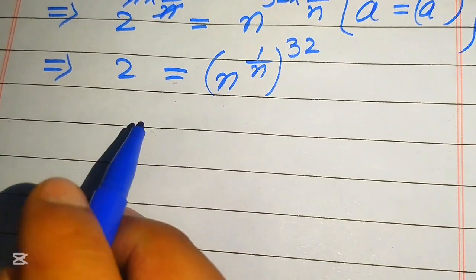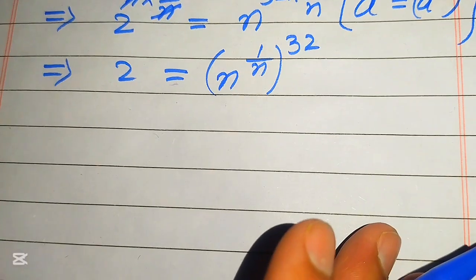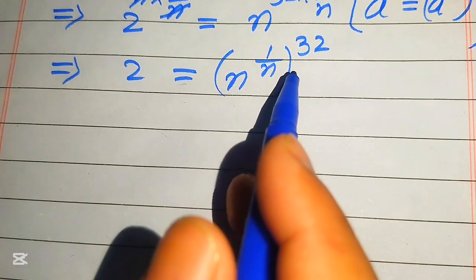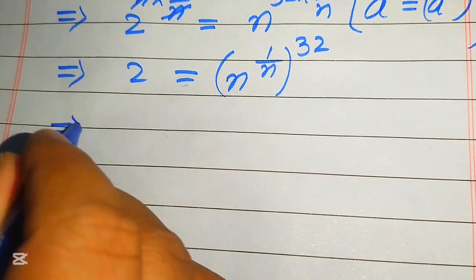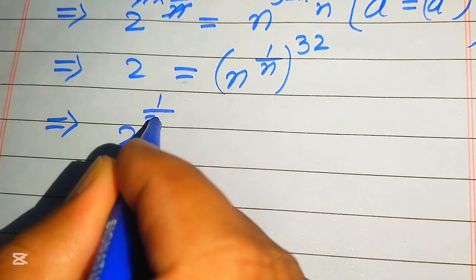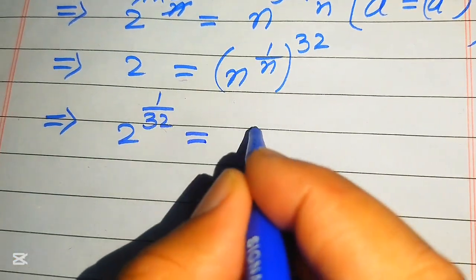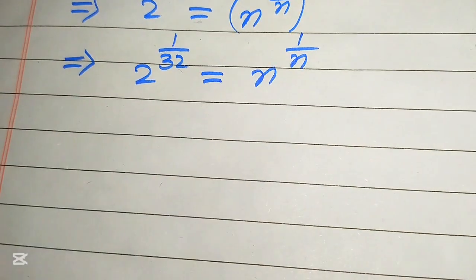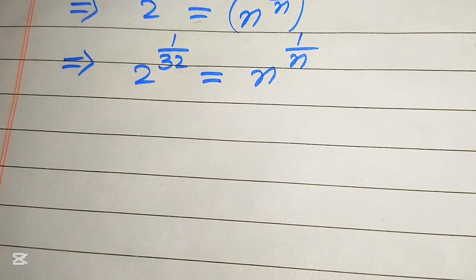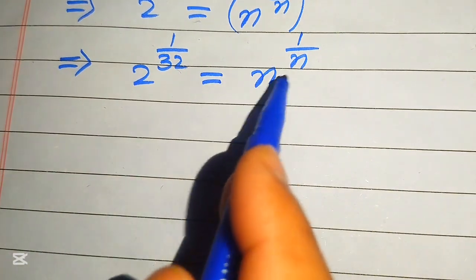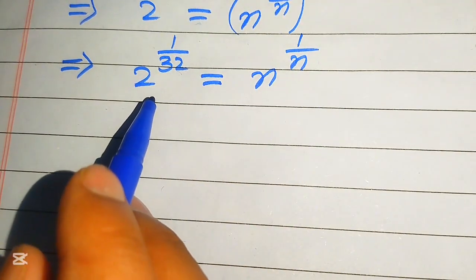In the next step we move variable terms to the right hand side and constant terms to the left hand side. We move this 32 to the left hand side and take the 32nd root on both sides, giving 2 to the power of 1 over 32 equals n to the power of 1 over n. Notice on the right hand side the exponent is the reciprocal of its base, so we need to create the same condition on the left hand side.